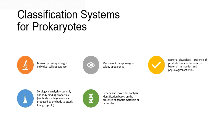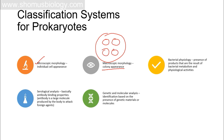The classification system for prokaryotes is based on many things. We give more weightage to morphological features — what we can see under the microscope. Microscopic morphology includes shape, size, and structure. Apart from that, macroscopic morphology means the colony appearance — not only how we see individual bacteria under the microscope, but also how their colony looks in the petri plate or agar plate.